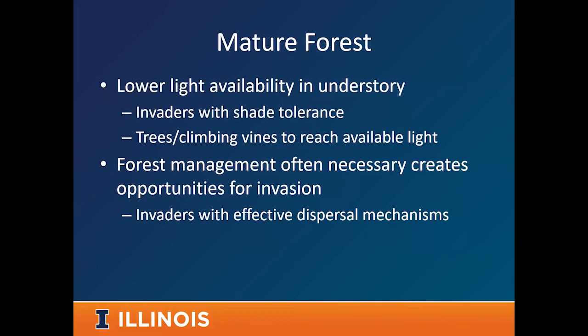Moving into the mature forest: a mature forest typically has lower light availability in the understory. You'll find invaders with a higher level of shade tolerance, or invaders that are trees or climbing vines that can get high enough to reach available light. With forest management creating disturbance opportunities, many mature forest invaders have effective dispersal mechanisms — wind-dispersed, water-dispersed, or bird-dispersed seeds — that allow them to move in and spread quickly.